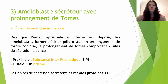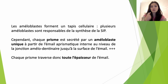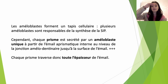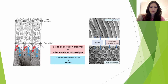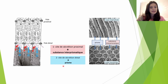Les deux sites de sécrétion sécrètent les mêmes protéines. Plusieurs améloblastes seront responsables de la synthèse de la substance interprismatique. En ce qui concerne les prismes, chaque prisme va être sécrété par un améloblaste unique, depuis l'émail aprismatique interne au niveau de la jonction amélo-dentinaire jusqu'à la surface de l'émail. Chaque prisme va donc traverser toute l'épaisseur de l'émail. Les deux sites de sécrétion vont sécréter les mêmes protéines.